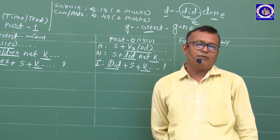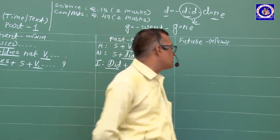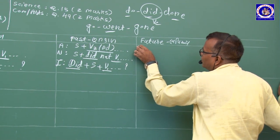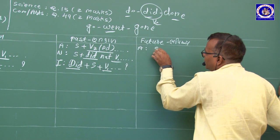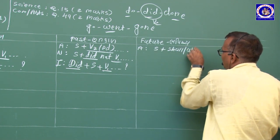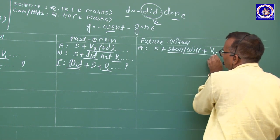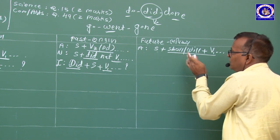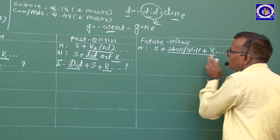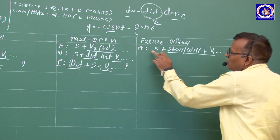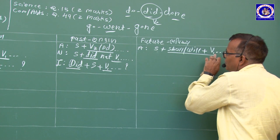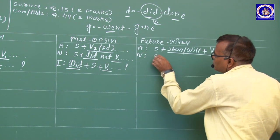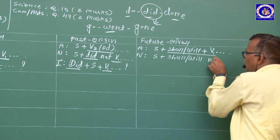Simple Future Tense: વિધાન વાક્યની અંદર shall/will + Verb (plain) આવે છે. Subject પછી shall/will. Negative: shall/will + not. Interrogative: shall/will વાક્યની શરૂઆતમાં. Shall (1st person), Will (2nd/3rd person). Negative: shall not / will not + verb.